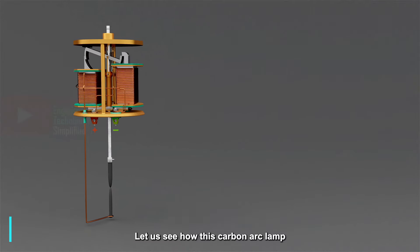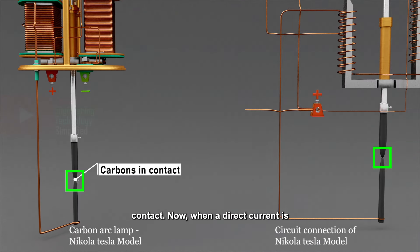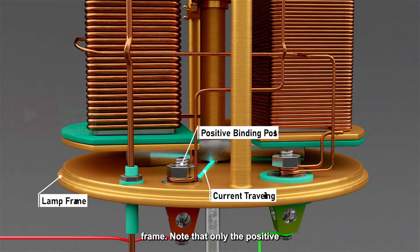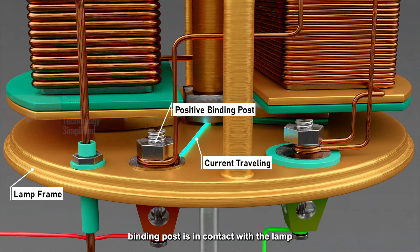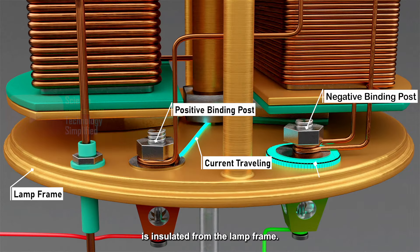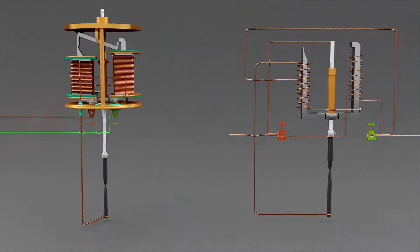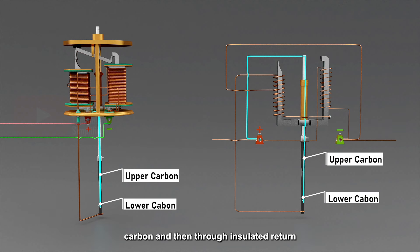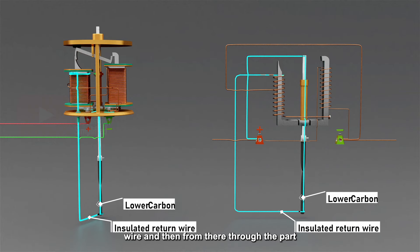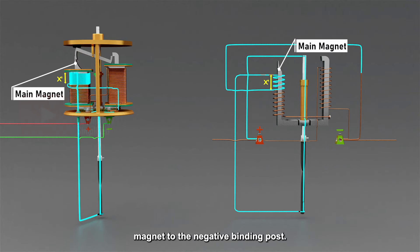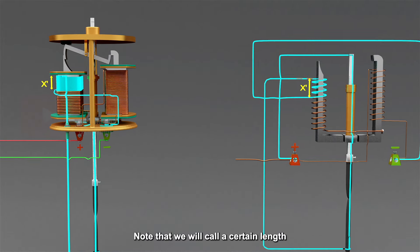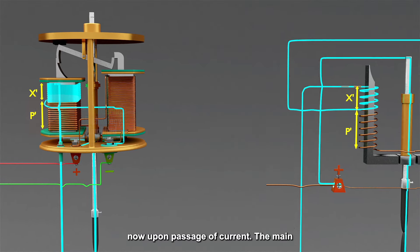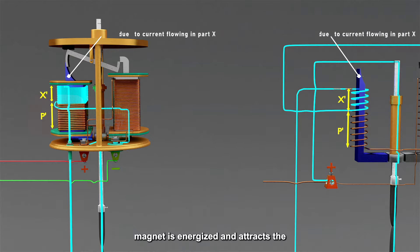Let us see how this carbon arc lamp works. At the start, the carbons are in contact. When a direct current is supplied, the current passes from the positive binding post E to the lamp frame. Note that only the positive binding post is in contact with the lamp frame, and the negative binding post is insulated from the lamp frame. This current travels from the frame to the upper carbon holder rod, then to the upper carbon, then to the lower carbon, then through the insulated return wire, and then through the part X' of the wire on the main magnet to the negative binding post.